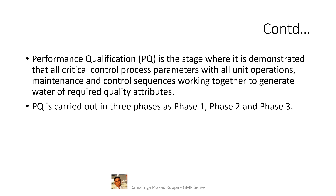Then, continue with phase 2 validation. In phase 2 validation, a reduced number of sampling points may be considered, and the selection of sampling points should be justified through a risk assessment report. It is recommended to make reports for phase 1 data and phase 2 data to establish that the system is set for full validation. If there are any modifications required, it may be justified to continue the validation program for longer periods.